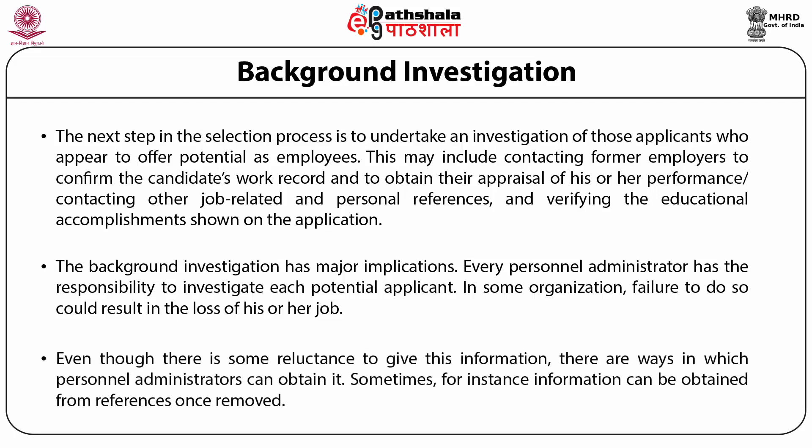Even though there is some reluctance to give this information, there are always ways in which personnel administrators can obtain it. For instance, information can be obtained from references once removed — for example, the personnel administrator can ask a reference whose name has been provided on the application form to give another or further reference about the candidate, someone who has knowledge of the candidate's work experience. By doing this, the administrator can eliminate the possibility of accepting an individual based on a glowing recommendation whose motivation was simply to get rid of the employee.